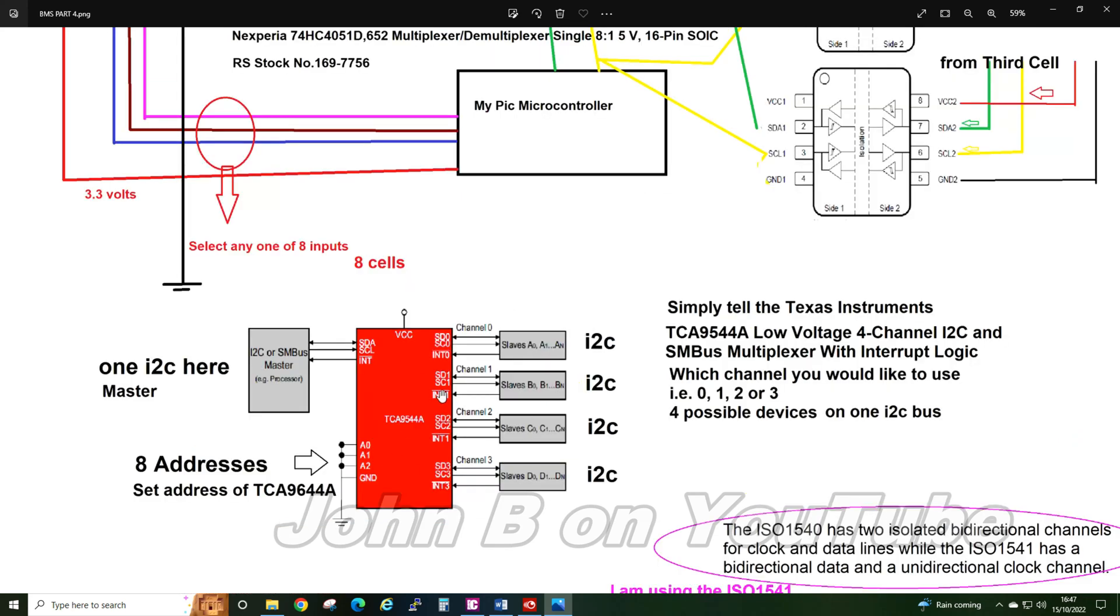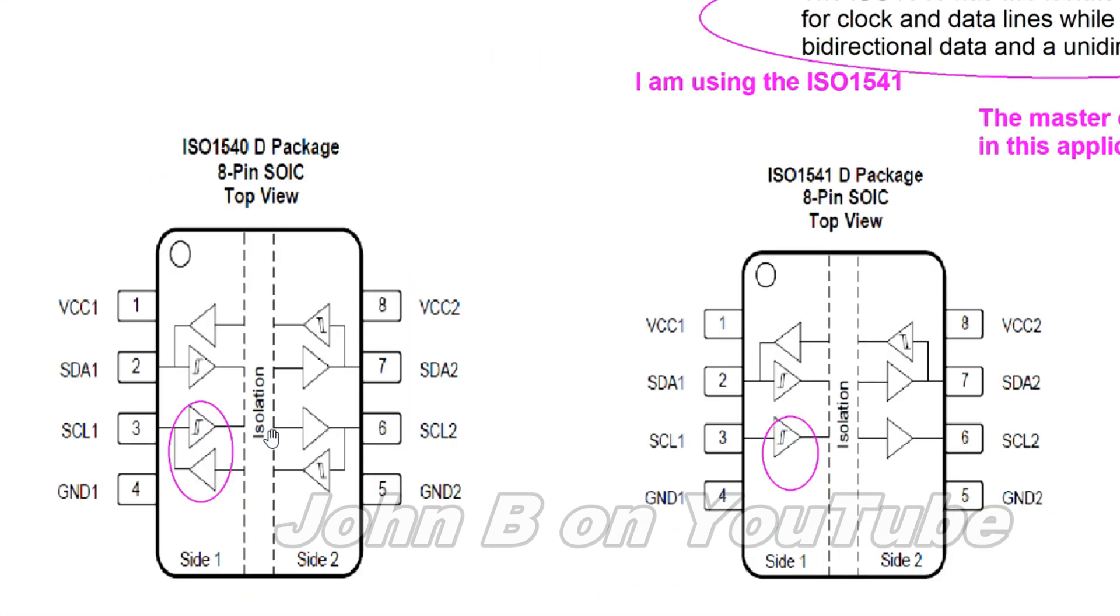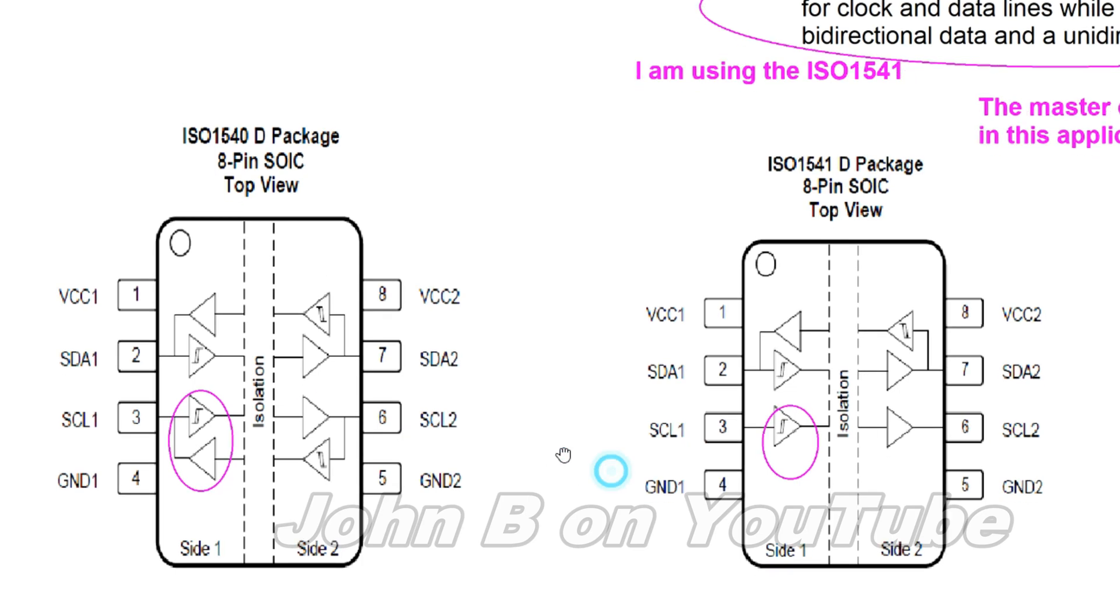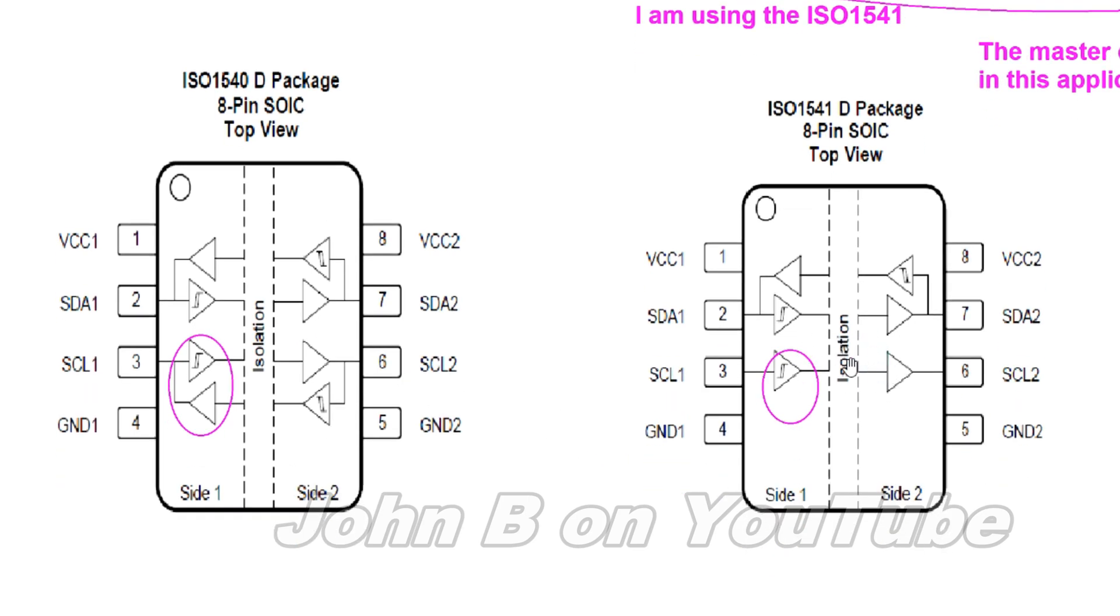Before I go, there's one important note I must mention with this I2C isolator. This is the ISO1540—bi-directional data and clock. You can see here, you can see here, these op amp symbols go face both directions. My device, ISO1541, data is bi-directional but the clock—notice it isn't bi-directional. There are none of these left in the world, or at least I think I tried them all—Mouser, Digi-Key, Farnell, and RS Components. No one had any.